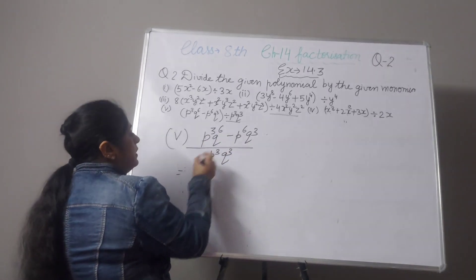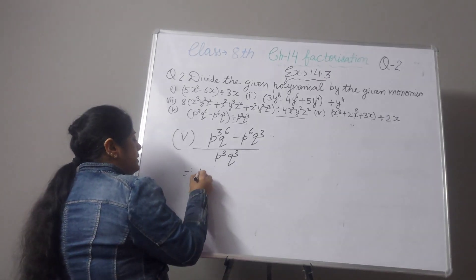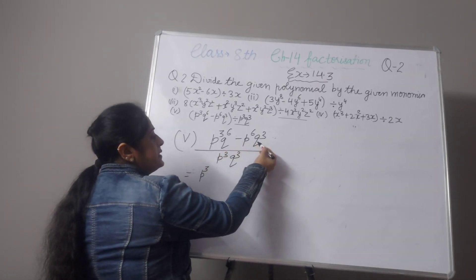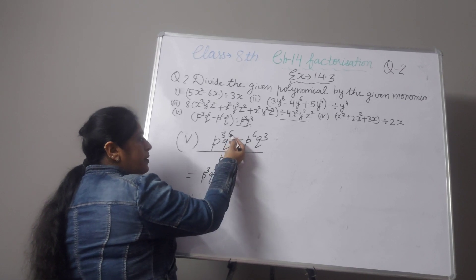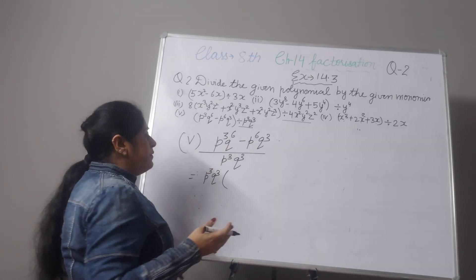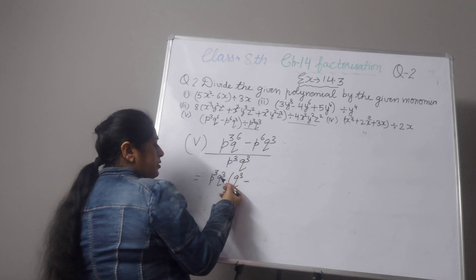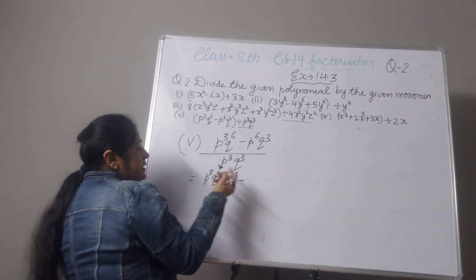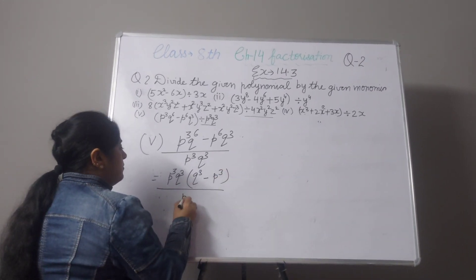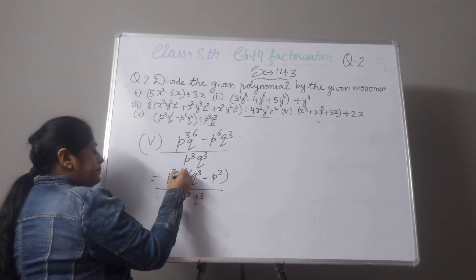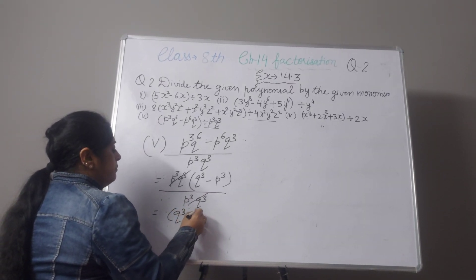Check the powers: for p, the minimum power is 3 (from p³ and p⁶), so take p³ outside. For q, minimum power is 3 (from q⁶ and q³), so take q³ outside. Inside: q⁶ ÷ q³ = q³, and p⁶ ÷ p³ = p³. So we have p³q³ times (q³ minus p³) divided by p³q³. The p³q³ cancels, and the answer is q³ minus p³.